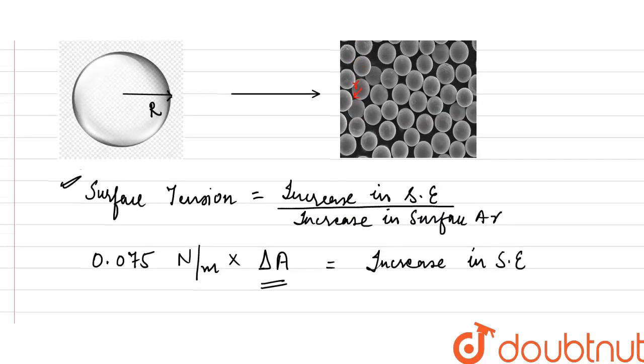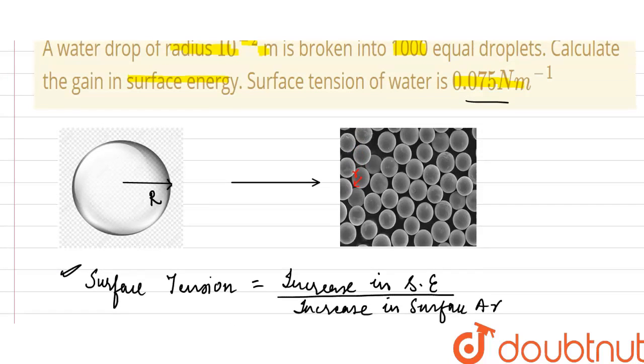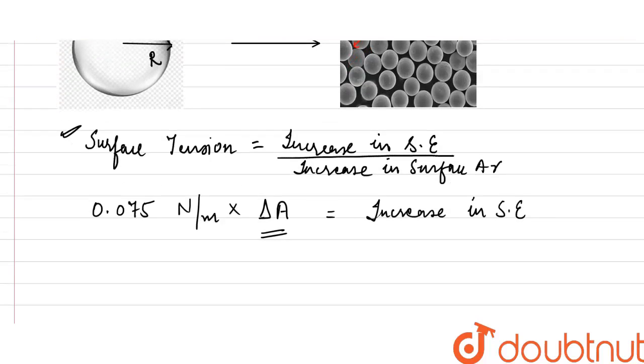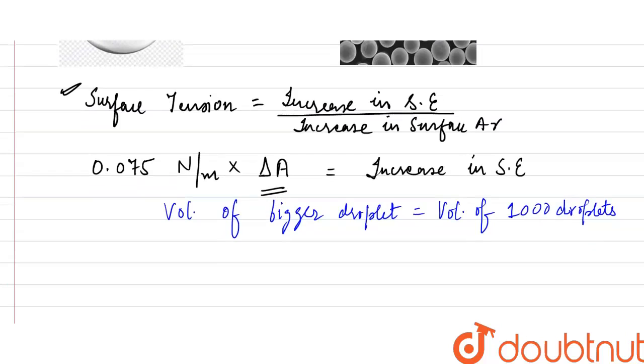We have to calculate the relation between the radius of the bigger droplet and radius of smaller droplets. We know that the volume of bigger droplet is equal to volume of 1,000 droplets. So, volume of bigger droplet would be equal to 4 upon 3 pi R cube.